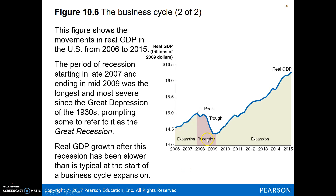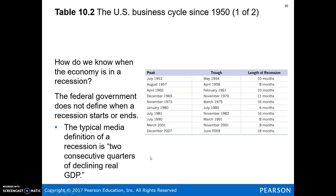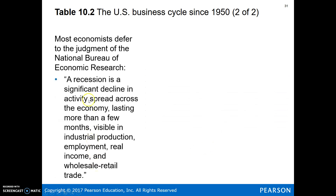The 2007–2009 recession was the most severe since the Great Depression, so it's been called the Great Recession. Real GDP growth after this recession was also slower to pick up than typical expansionary periods. There's no official government definition of a recession; the media often uses two consecutive quarters of declining real GDP. The National Bureau of Economic Research defines a recession as a significant decline in activity spread across the economy lasting more than a few months, visible in industrial production, employment, real income, and wholesale-retail trade.